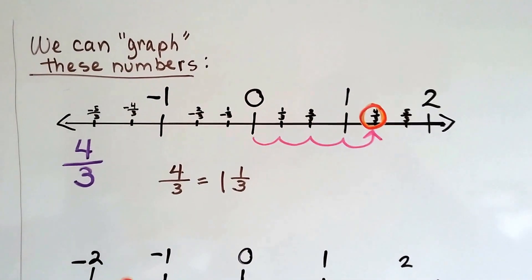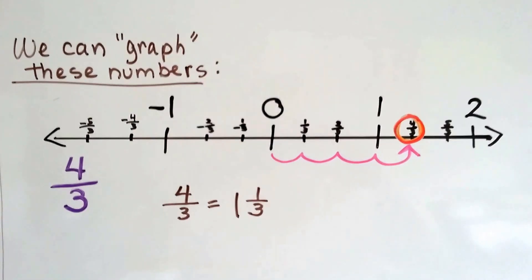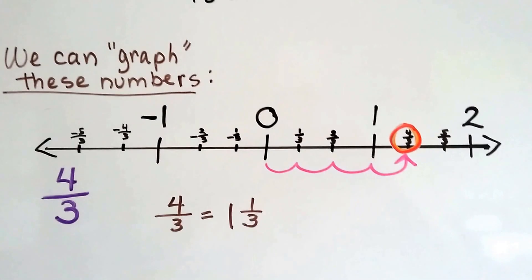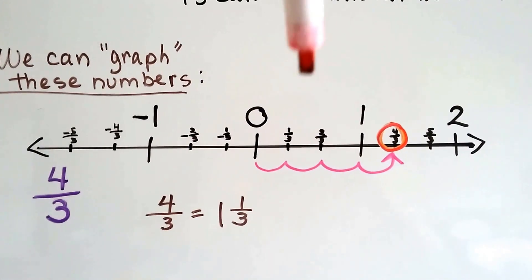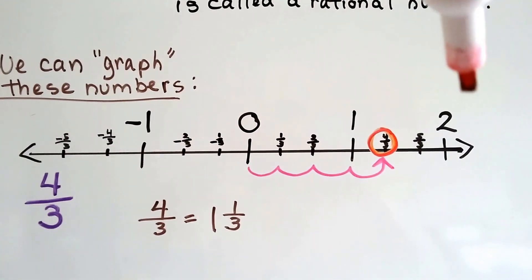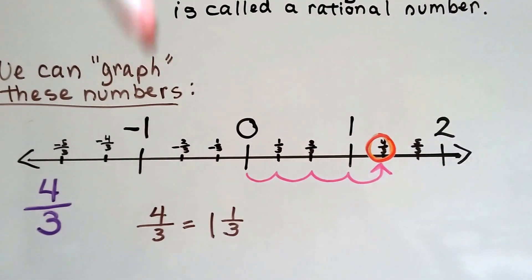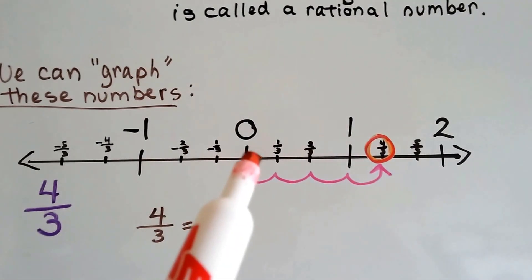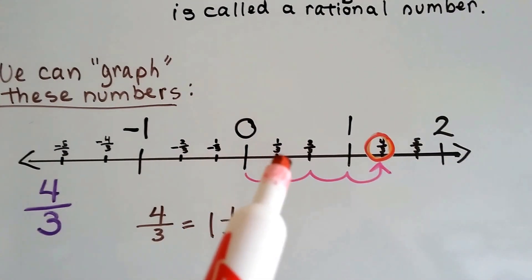We can graph these numbers. If we've got four-thirds, you can see the zero in the center right here. We've got a positive one and a positive two. We've got a negative one over here. And each of the spaces between the whole numbers is broken into thirds.